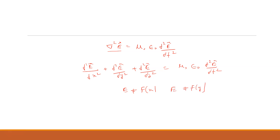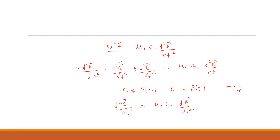If the wave is propagating along the z direction, then the x and y partial derivative terms equal zero. The remaining equation will be ∂²E/∂z² = μ₀ε₀ ∂²E/∂t². Let this be equation number one.